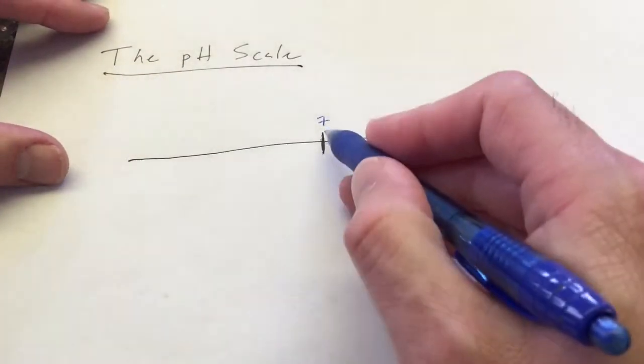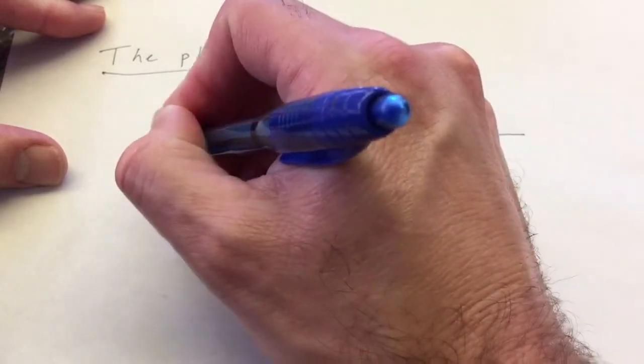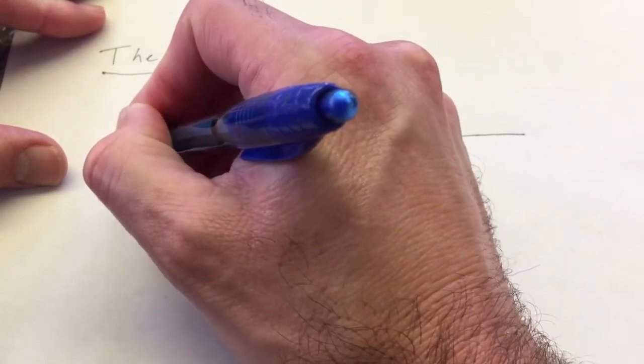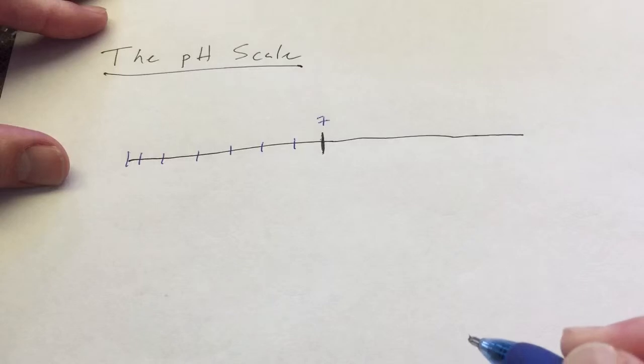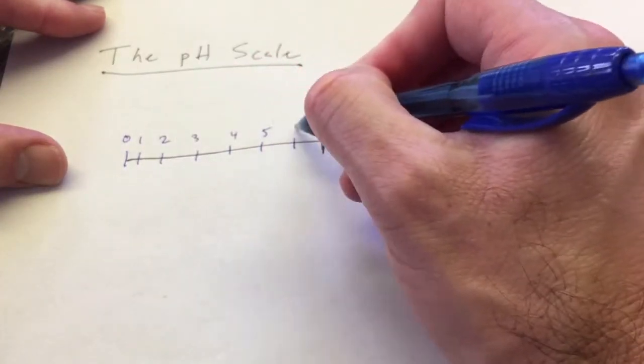So 7 is preceded, of course, by 6, 5, 4, 3, 2, 1, 0. And then, of course, to the right,